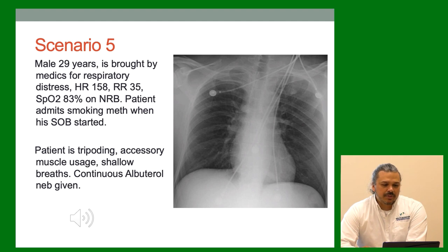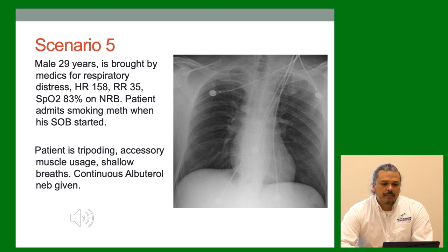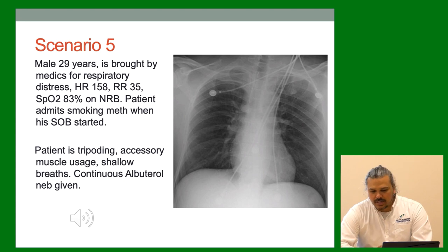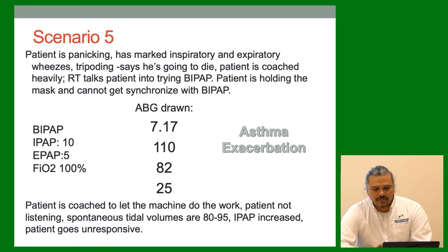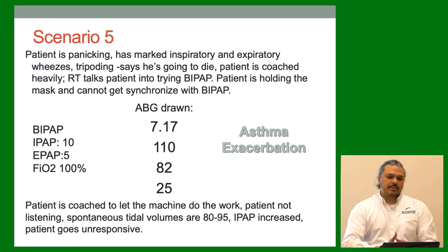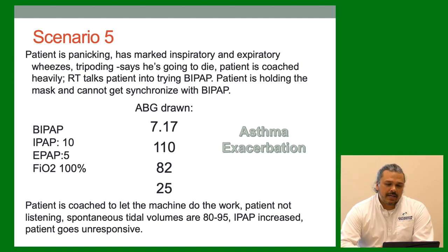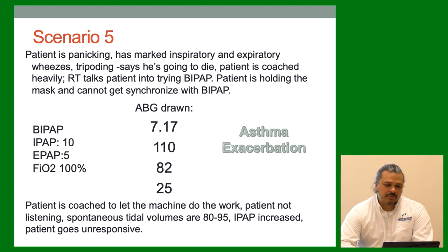Next scenario: Male, 29, brought in by medics for respiratory distress. Heart rate 158, respiratory rate 35, SAT 83% on non-rebreather. Patient admits smoking meth when shortness of breath started. Patient is tripoding, using accessory muscles. Continuous albuterol given. X-ray looks pretty clear. Patient is panicking, has marked inspiratory wheezes, is tripoding, says he's going to die. Patient is coached heavily. RT talks patient into trying BiPAP — patient is holding the mask but cannot synchronize. Subsequent gas: 7.17 / 110 / 82 / 25. Asthma exacerbation.